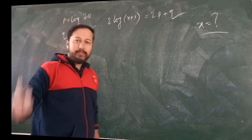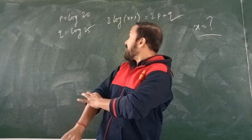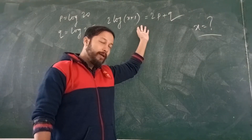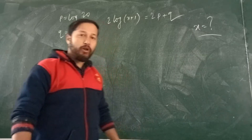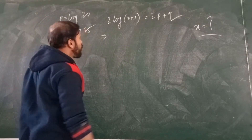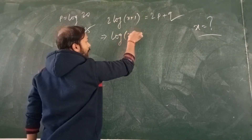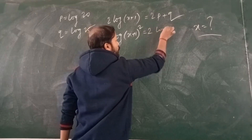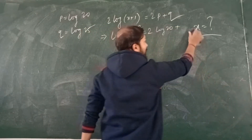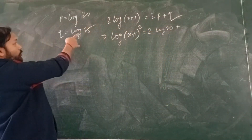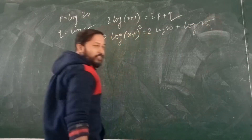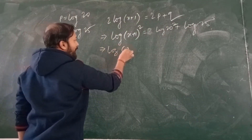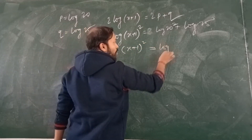Let us move to the next question. The values of P and Q are given: P = log 20 and Q = log 25. One more equation is given, and we have to find the value of x. The 2 goes as a power, so log of (x+1)/2 squared equals 2P. What is P? P is log 20. So it is log of 20² = log 400. Plus Q, which is log 25.